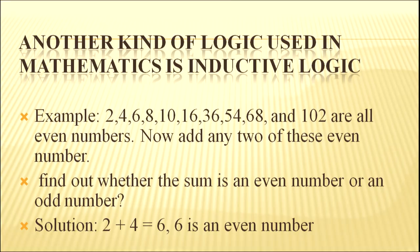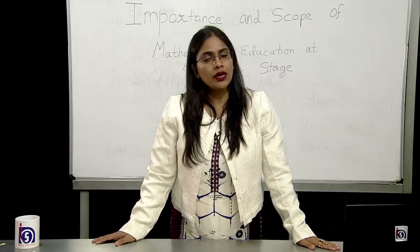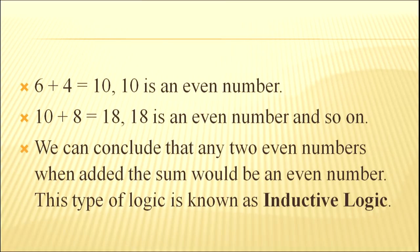Here is the solution. 2 + 4 = 6, 6 is an even number. 6 + 4 = 10, 10 is an even number. 10 + 8 = 18, 18 is an even number and so on. We can conclude that any two even numbers when added, the sum would be an even number. This type of logic is known as inductive logic.